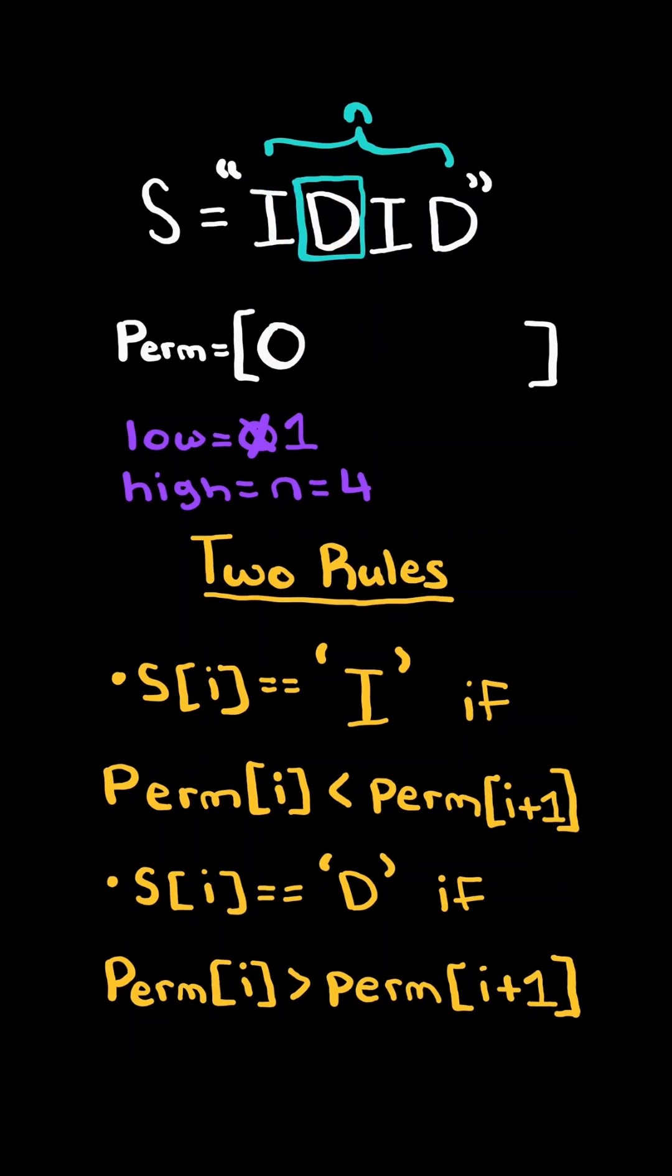If the character is a D, this means in the permutation array we want the current number to be greater than the next. So we append the largest available number, high, and then decrement high and continue to the next character.